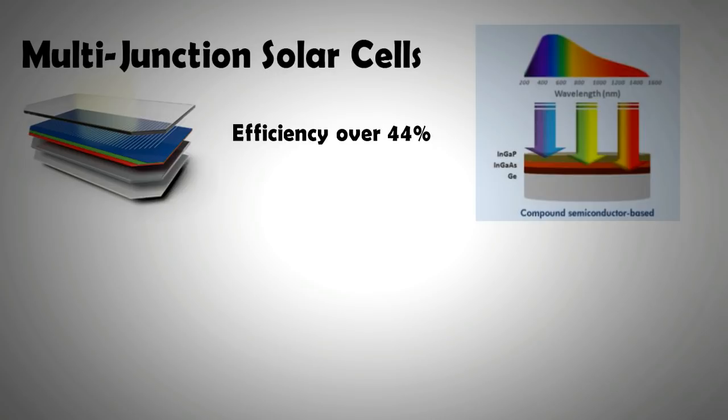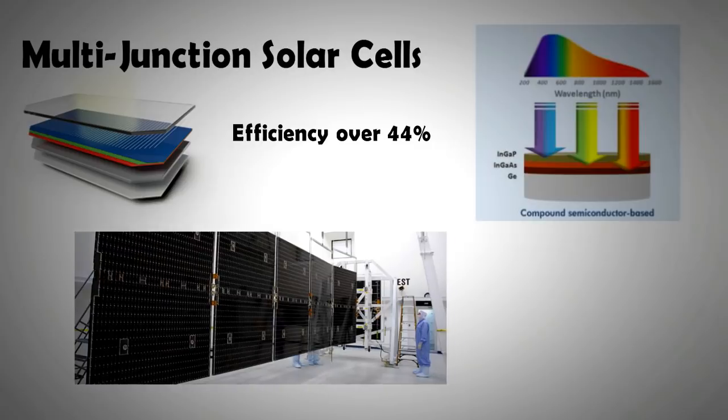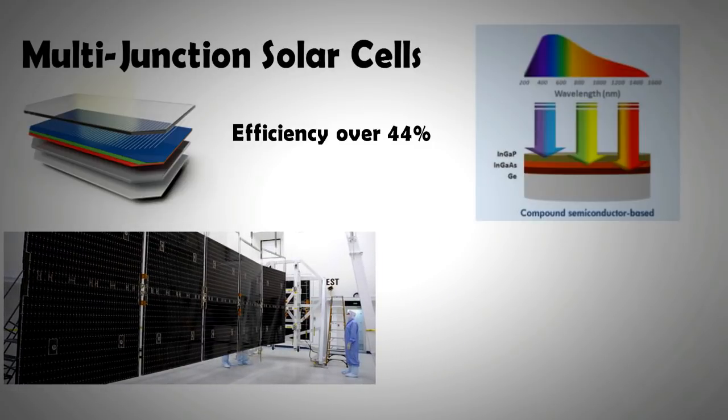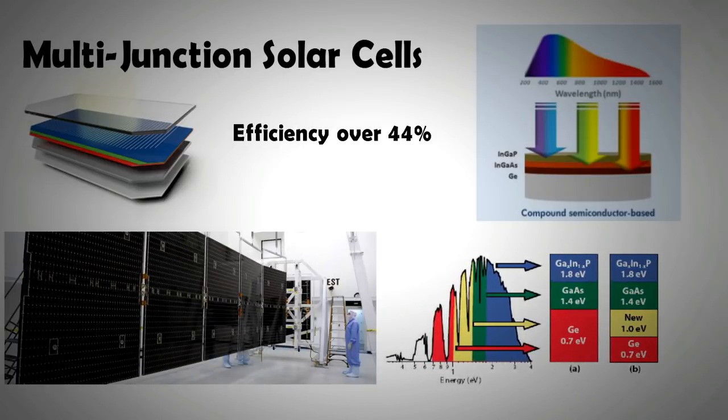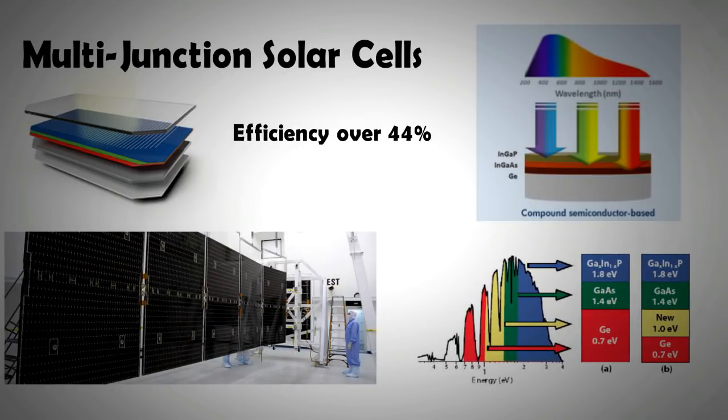This is done to convert most of the electricity into light. As noted earlier, even in the best of solar panels, only 23% energy is converted into electricity. The remaining energy is lost as heat. In a multi-junction solar cell, it is made sure that the amount lost as heat is minimal. This is done by having layers of solar cells stacked on each other.